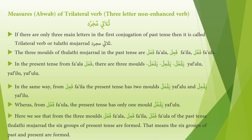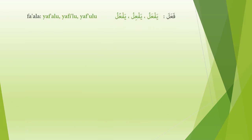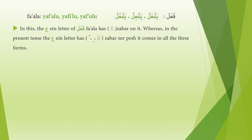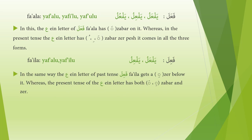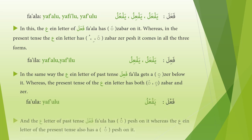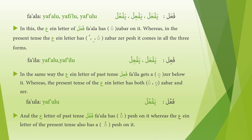That means six groups of past and present tense are formed. In fa'ala, the 'ain letter has zhabar on it, whereas in the present tense the 'ain letter can have zhabar, zayr, or pejh — all three forms. In fa'ila, the 'ain letter of the past tense gets a zayr below it, whereas the present tense 'ain letter has either zhabar or zayr. In fa'ula, the 'ain letter of the past tense has pejh on it, and the 'ain letter of the present tense also has pejh.